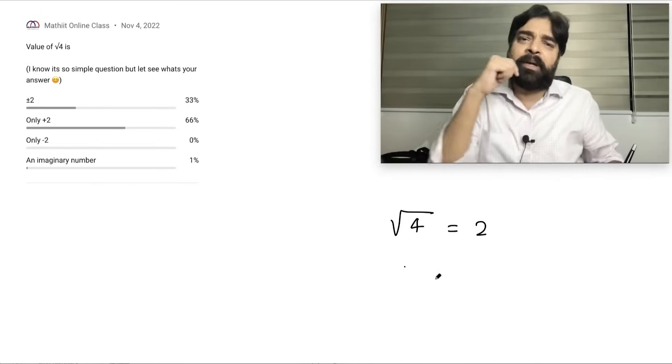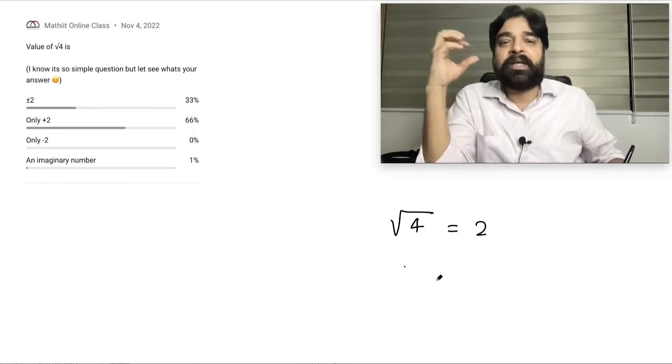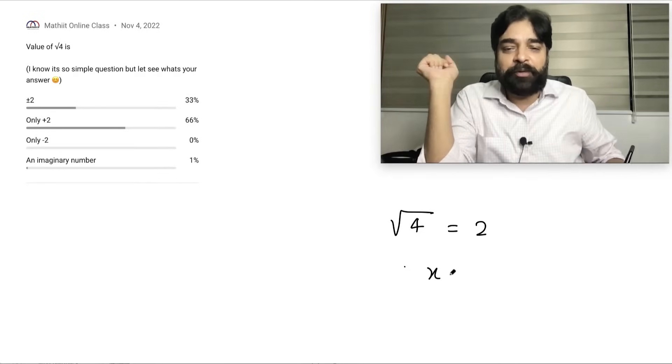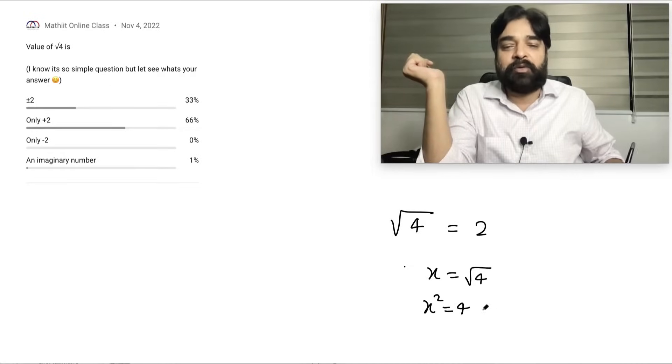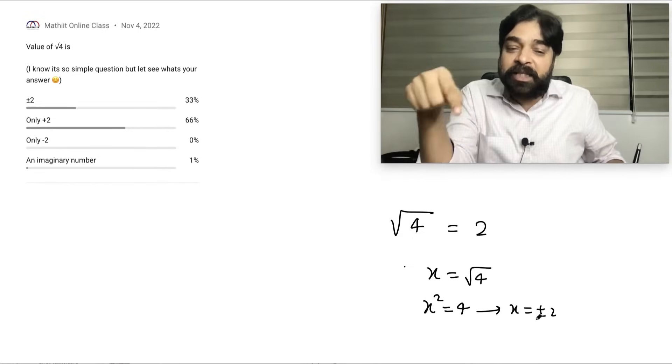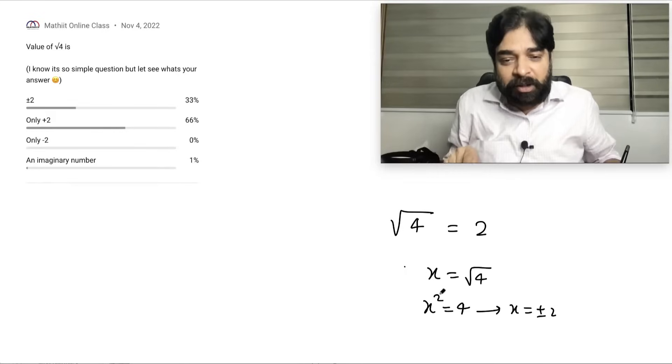So why we developed from childhood root of 4 is plus minus 2. Basically in our mindset something like that if suppose root of 4 value you don't know, x equal to root of 4. So what we used to do, we square both sides x square equal to 4 and from here we used to get it x equal to plus minus 2. But this plus minus is not because of this square root, it is because of this square.